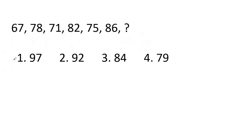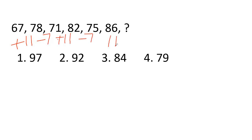Next question: 67, 78, 71, 82, 75, 86, question mark. The pattern is plus 11, minus 7, plus 11, minus 7 alternating. So 86 minus 7 equals 79.